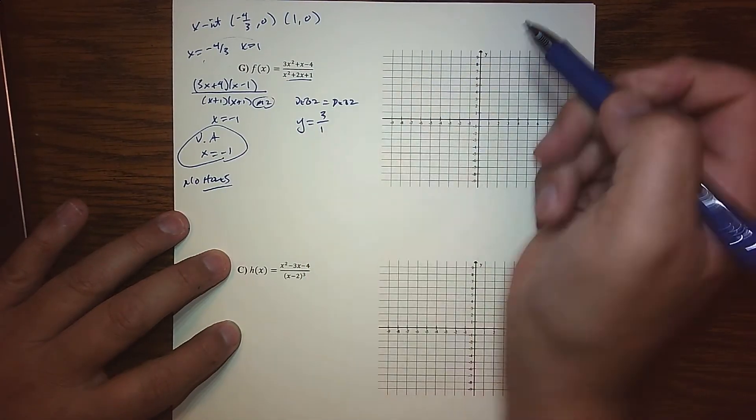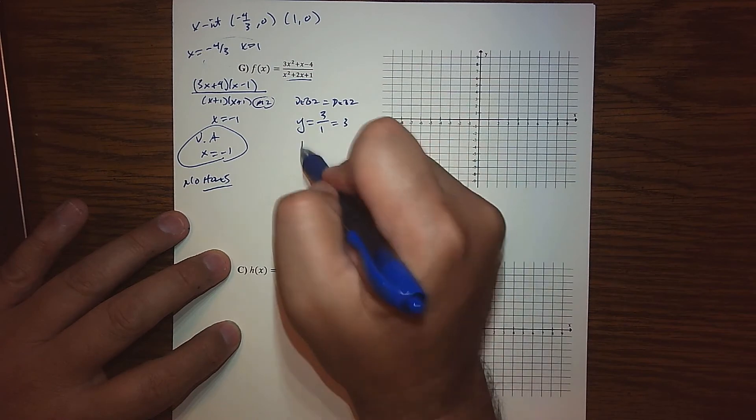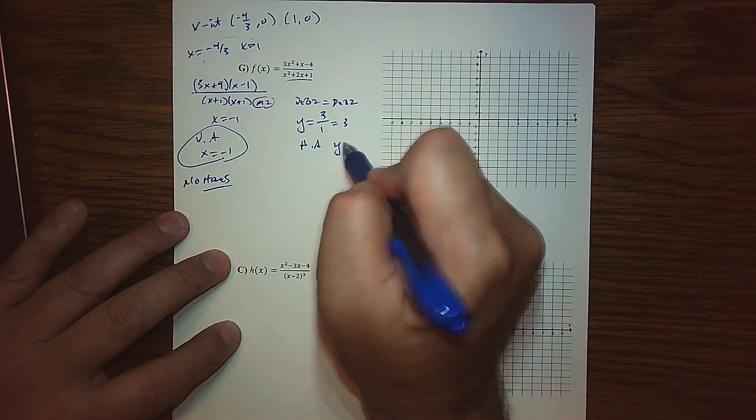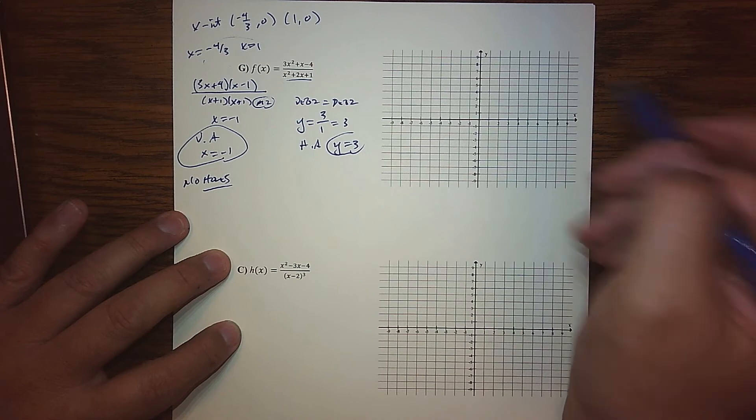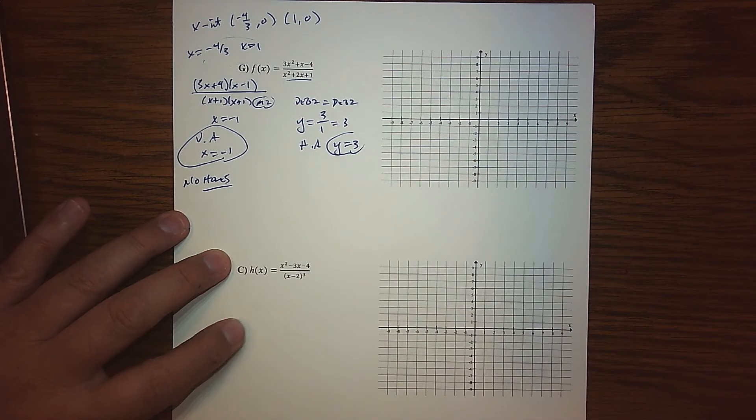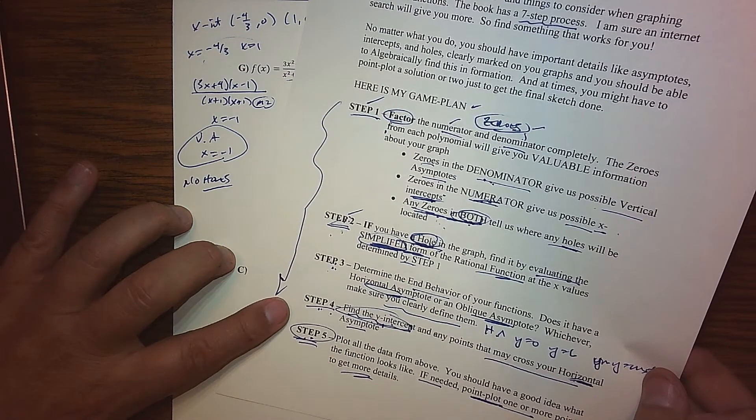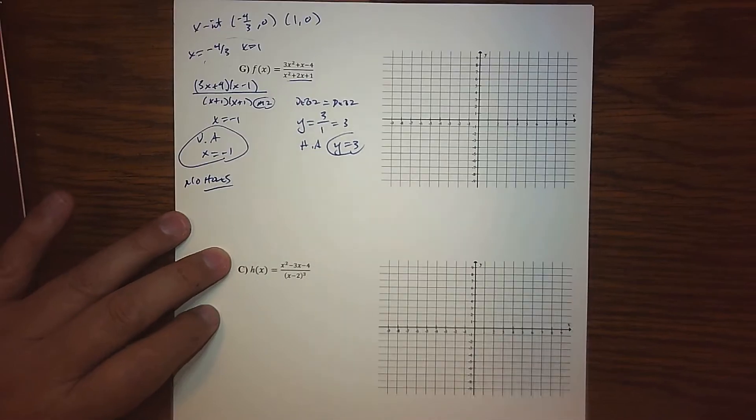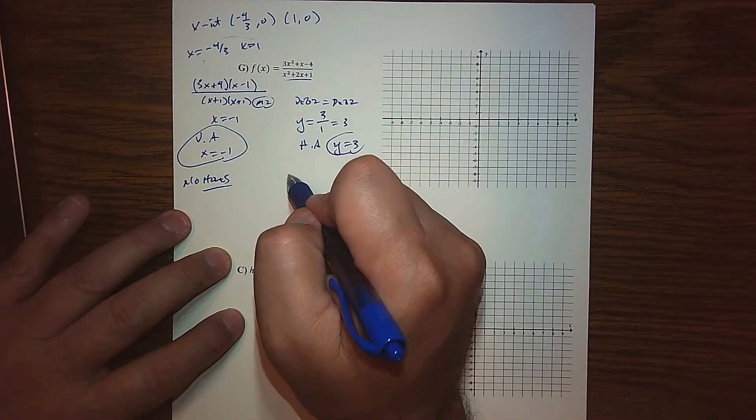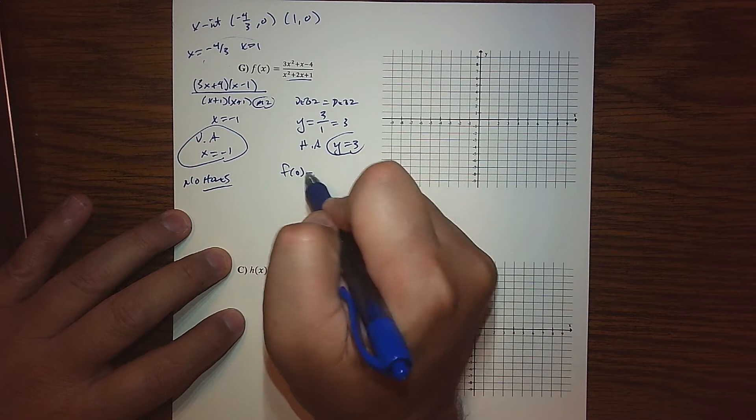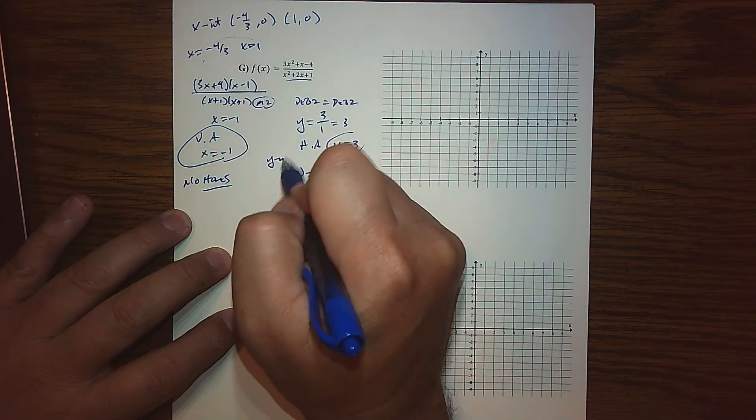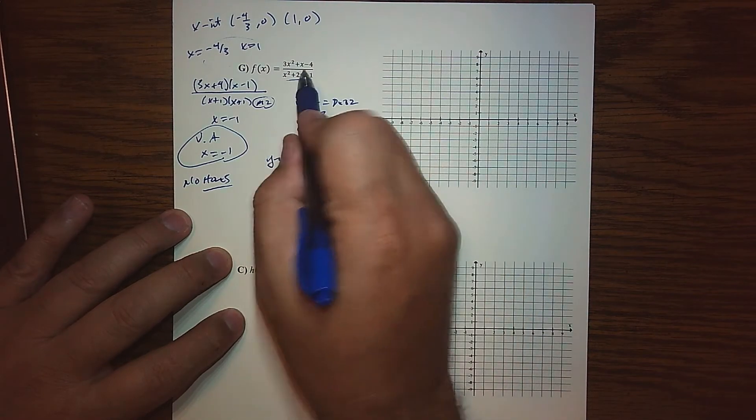So my horizontal asymptote is 3 over 1, y equals 3. At the bare minimum, right, my fourth step is to at least find our y-intercept. Am I crossing the y-axis and where?